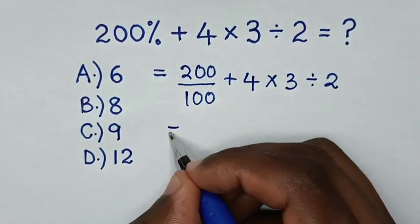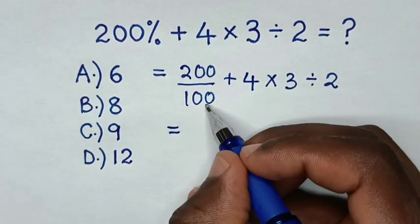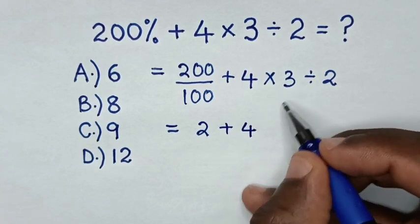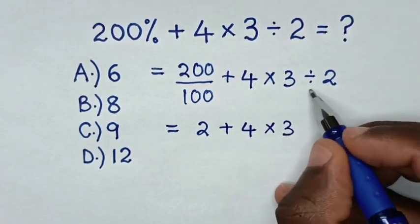In the next step, it will be equal to 200 divided by 100 is 2, then plus 4, times 3, divided by 2.